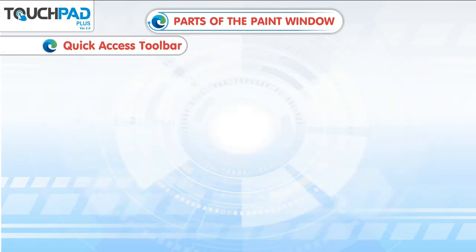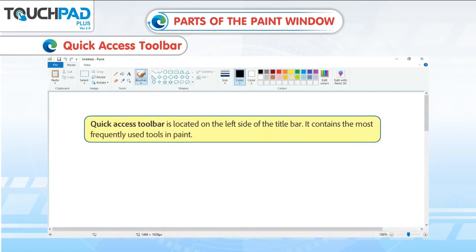Quick Access Toolbar. The Quick Access Toolbar is located on the left side of the title bar. It contains the most frequently used tools in paint.